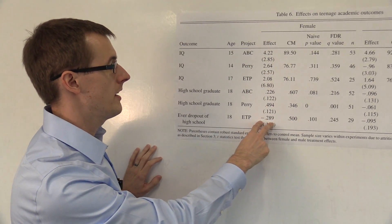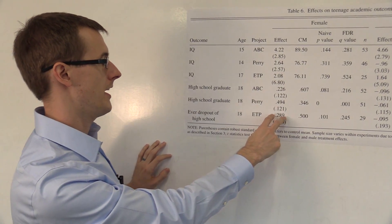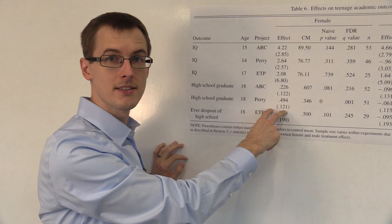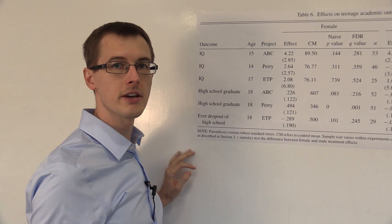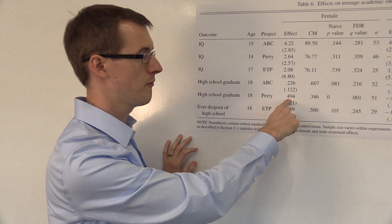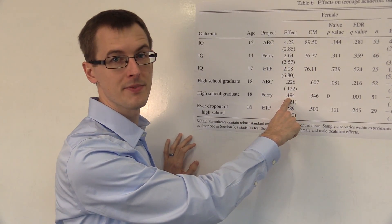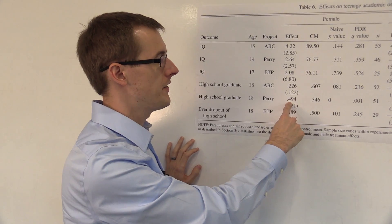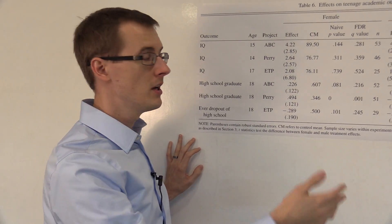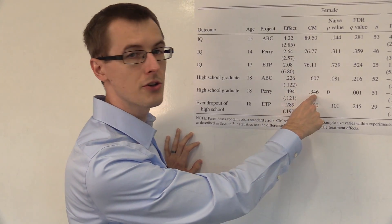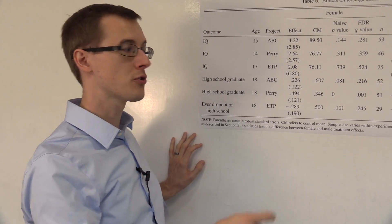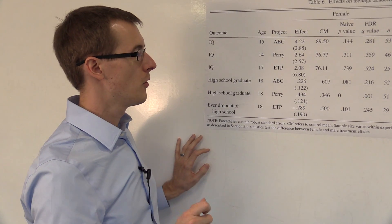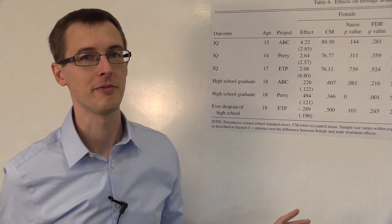This column here is labeled effect. That is the difference between the treatment group mean and the control group mean, just the conditional average treatment effect: 49.4%. So that means that in the treatment group, the people who got preschool, about 49 plus 34, or about 84% of those females graduated from high school by age 18.